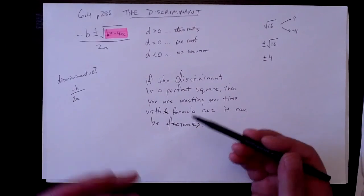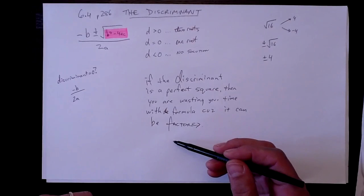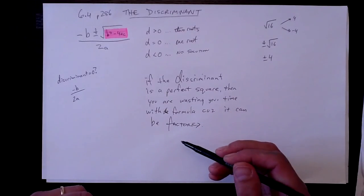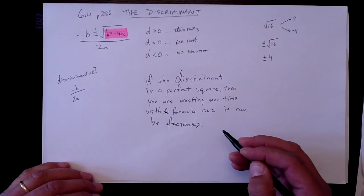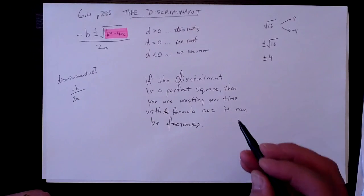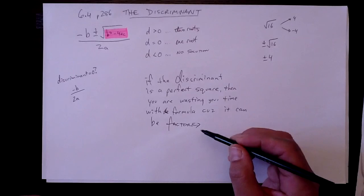b squared minus 4ac, and if that happens to equal like 9 or 100 or 625 or any one of these other perfect squares that you should have memorized up to a thousand, then you could factor it.